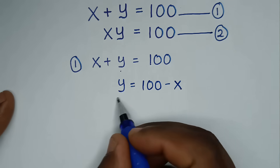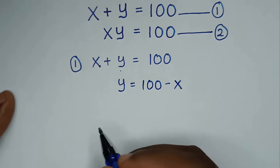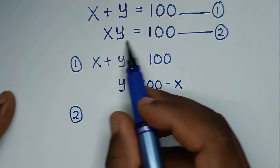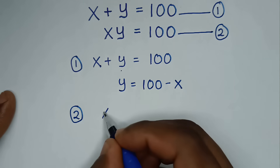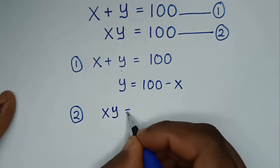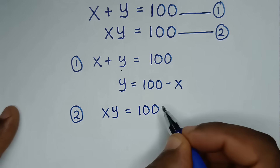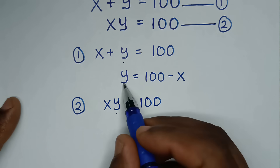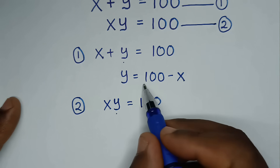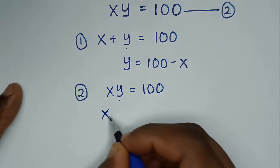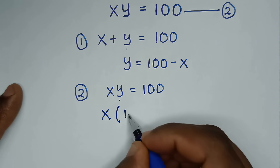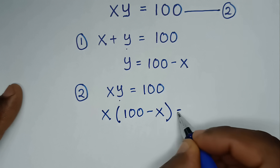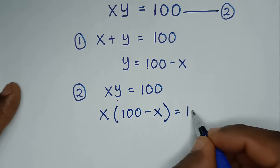Note this equation in terms of y. Then from equation 2, which is x times y is equal to 100, we substitute this equation in terms of y, which is 100 minus x. So it will be x times (100 minus x) is equal to 100.